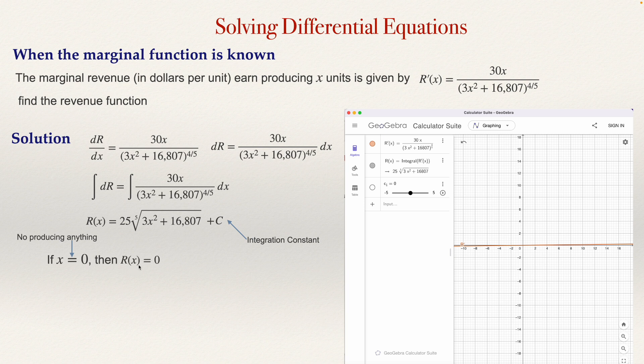So if the revenue will be zero, then we can put a zero here instead of this x. So we have then that 0 equals 25 times the fifth root of (3 × 0² + 16,807) plus c. Obviously, this is zero, this will be 25.